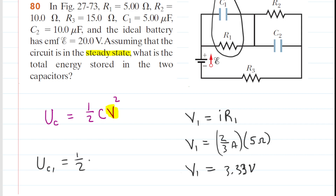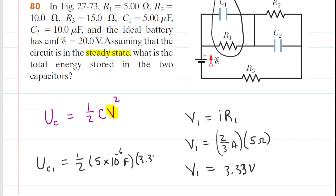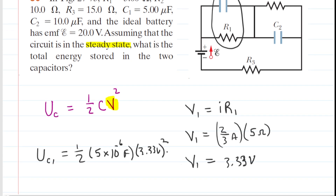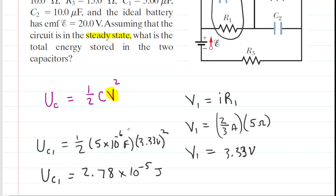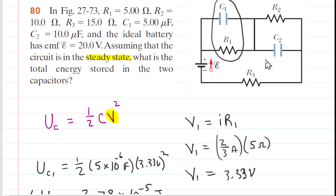Now we plug that in for the potential difference across C1. We compute one-half times the capacitance of C1 — given in the problem in microfarads, so multiply by 10 to the minus 6 to convert to farads — times 3.33 volts squared. Don't forget to square it. When you simplify, the potential energy stored in capacitor 1 is approximately 2.78 times 10 to the minus 5 joules.